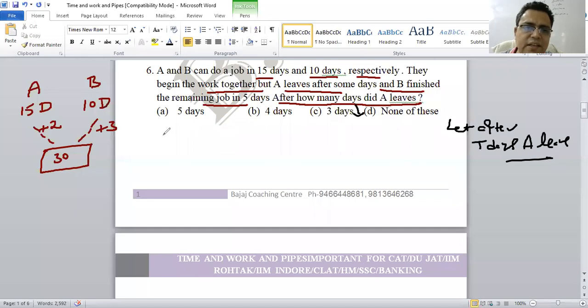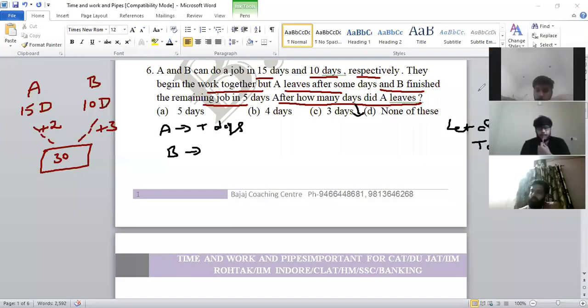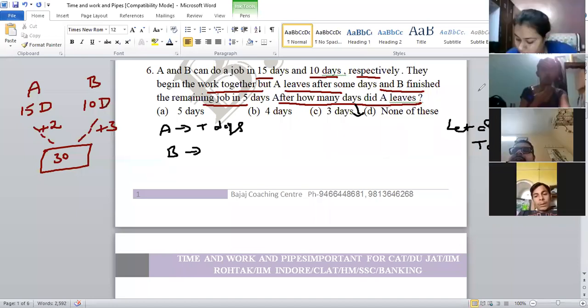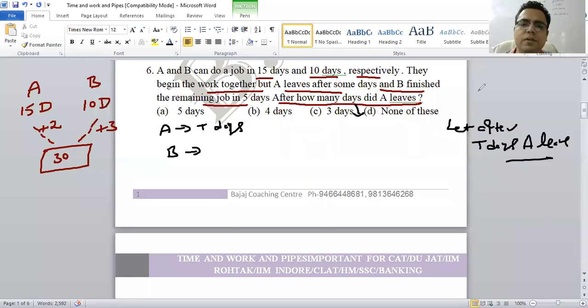T days. Now, if you could tell me, how many days did B work? T plus 5 days. Very good. B worked T plus 5.